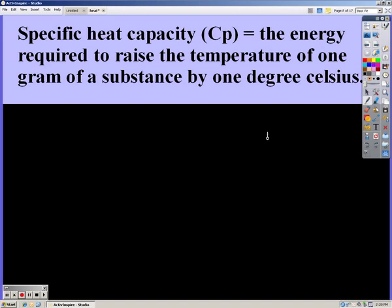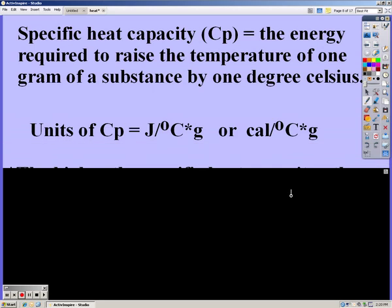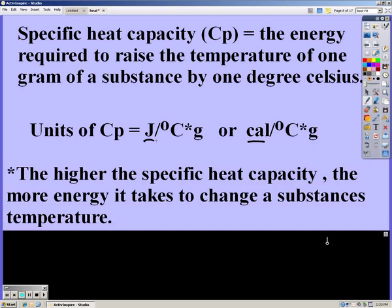Specific heat capacity, which is represented CP, is the energy required to raise the temperature of one gram of a substance by one degree Celsius. The units of specific heat capacity are joules per degree Celsius times grams or calorie per degree Celsius times grams. And you're going to use joules or calories depending on what your energy is in. The higher the specific heat capacity, the more energy it's going to take to change a substance's temperature.